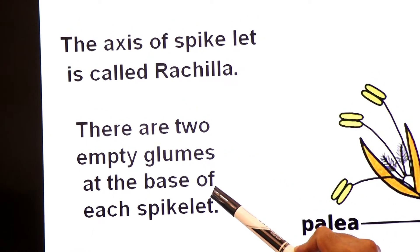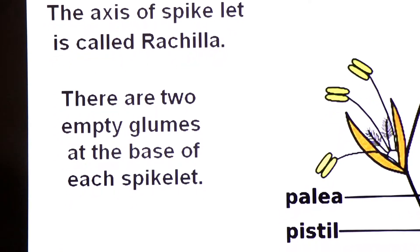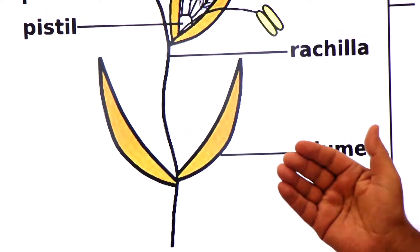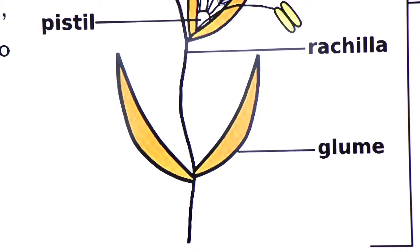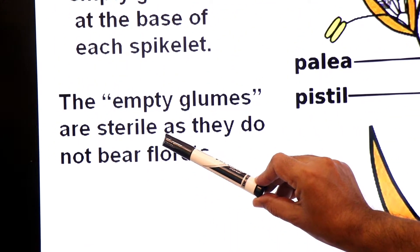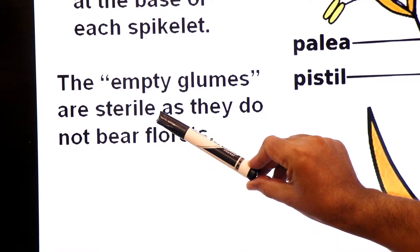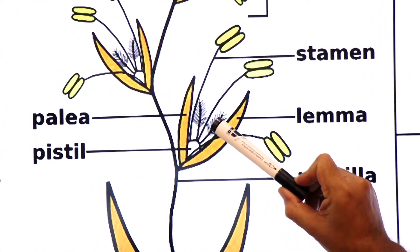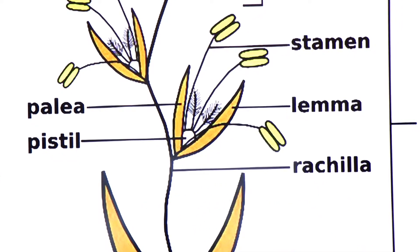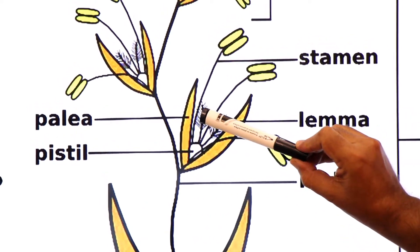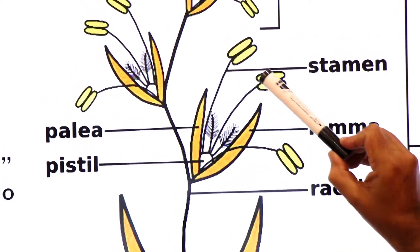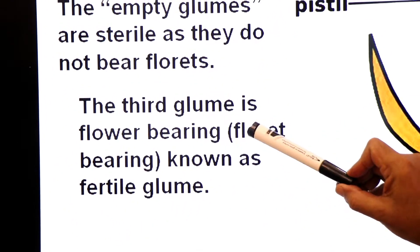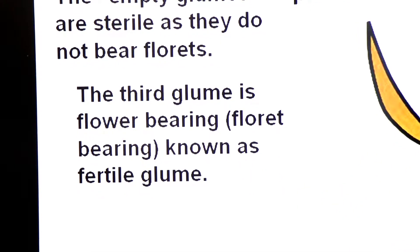There are two empty glumes at the base of each spikelet. The first and second glumes are empty — they do not bear flowers in their axils, so they are called sterile glumes. The third glume is fertile, bearing florets. You can see feathery stigma and stamens within it, so the third glume is called the fertile or flower-bearing glume.